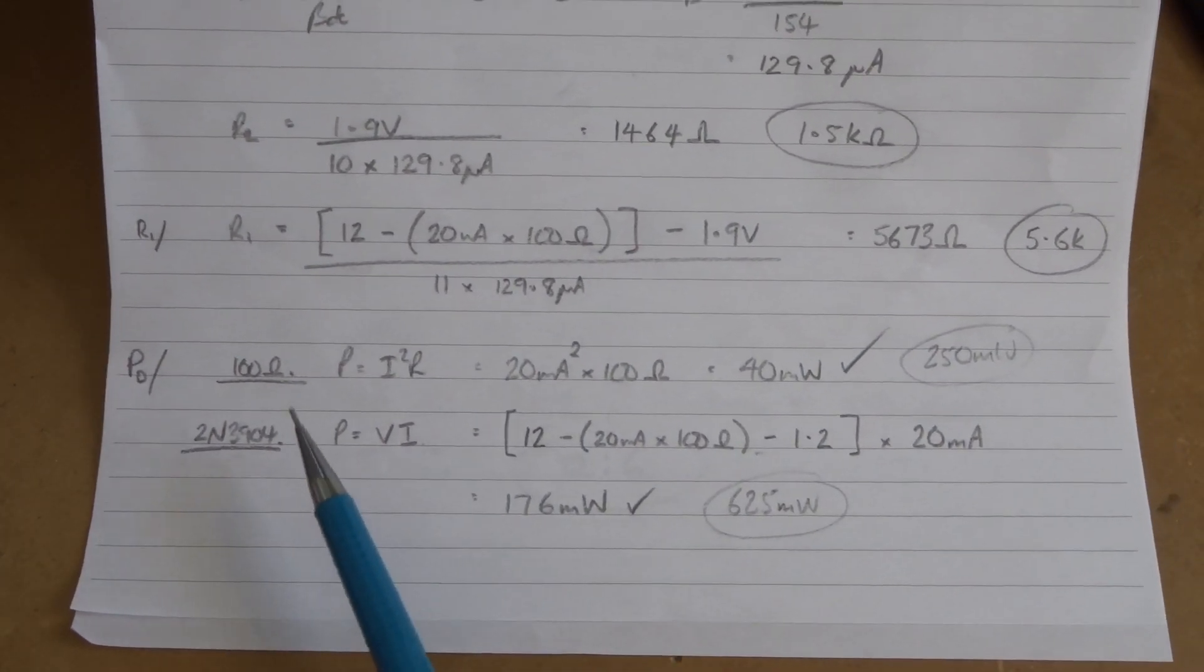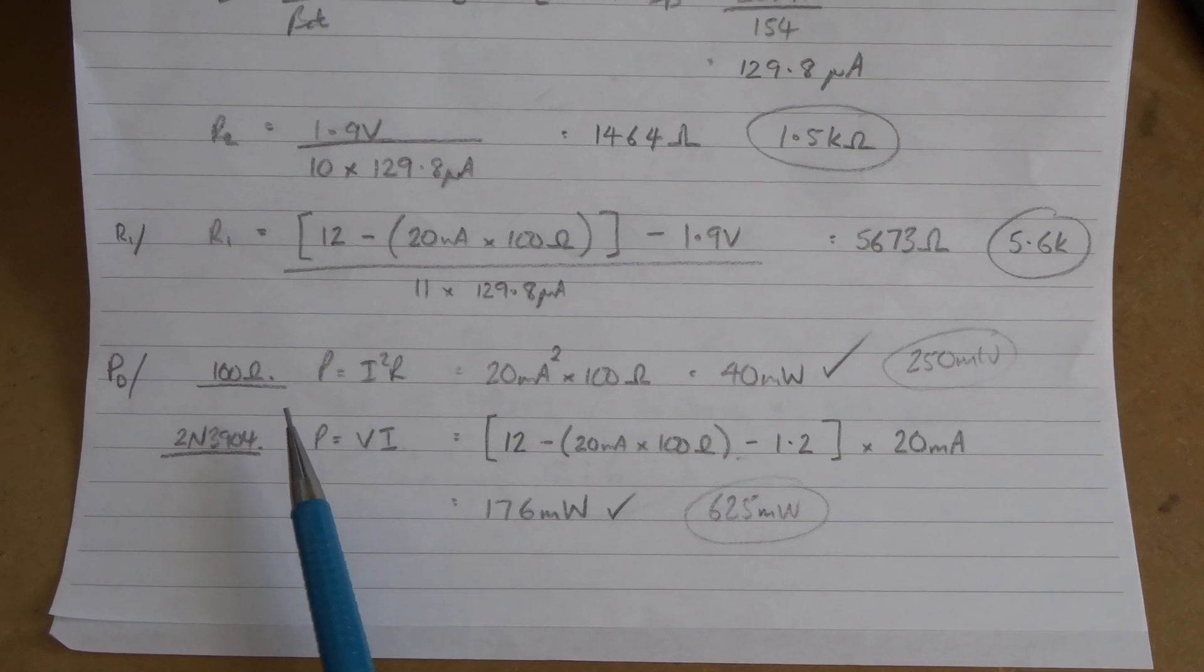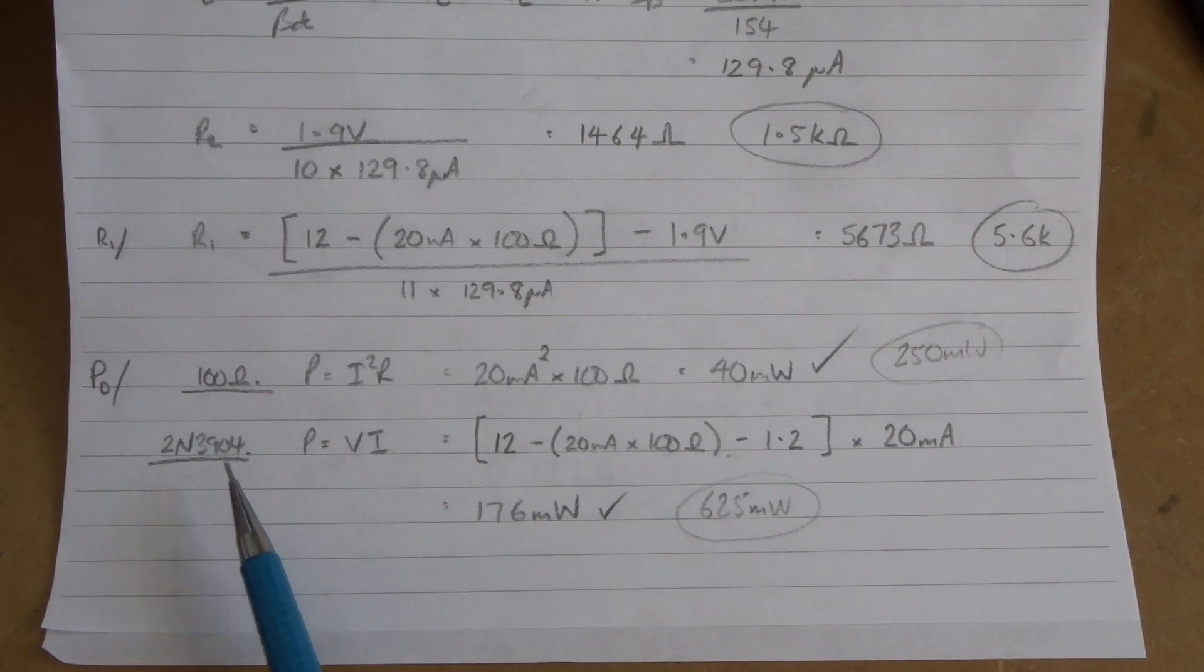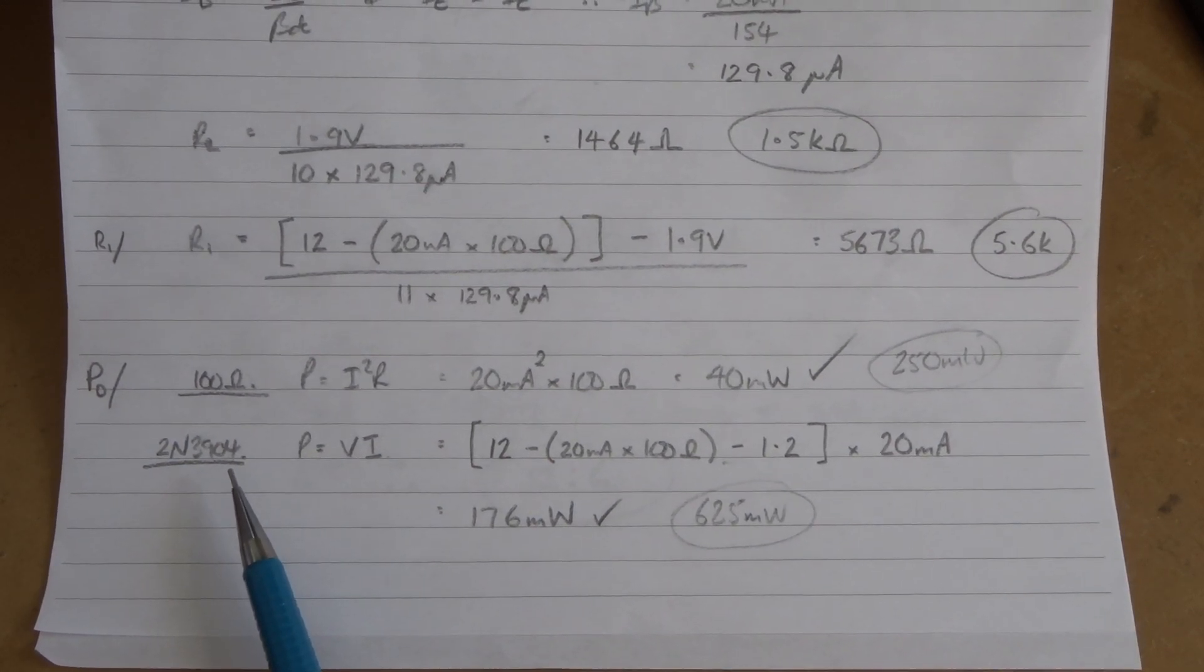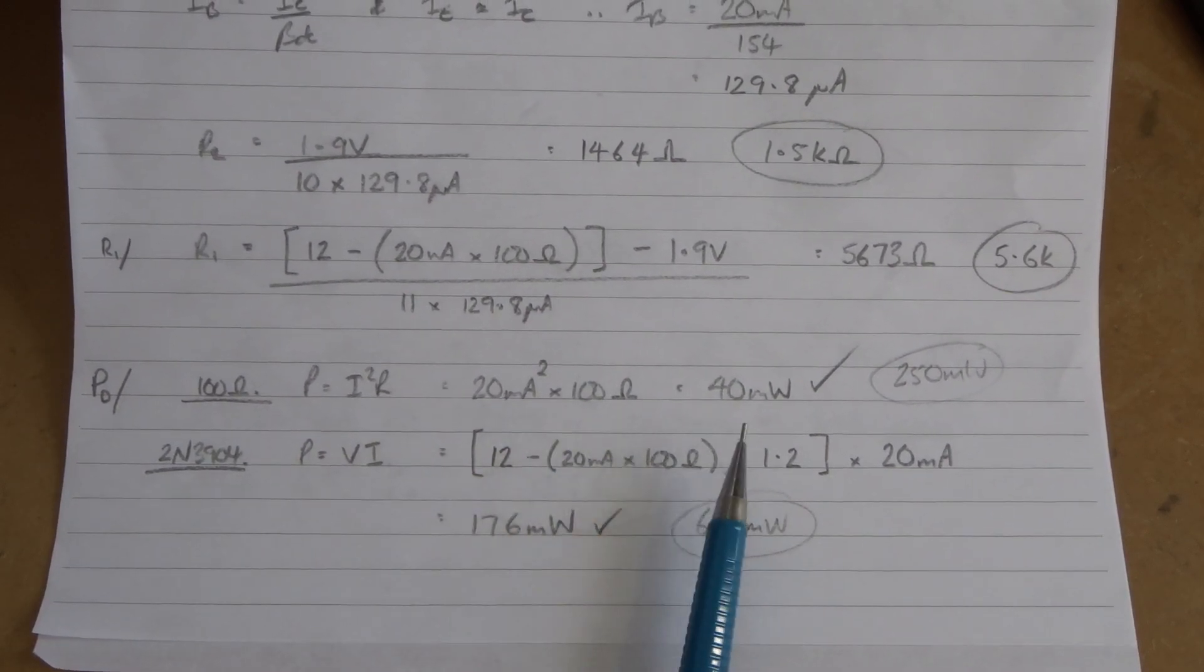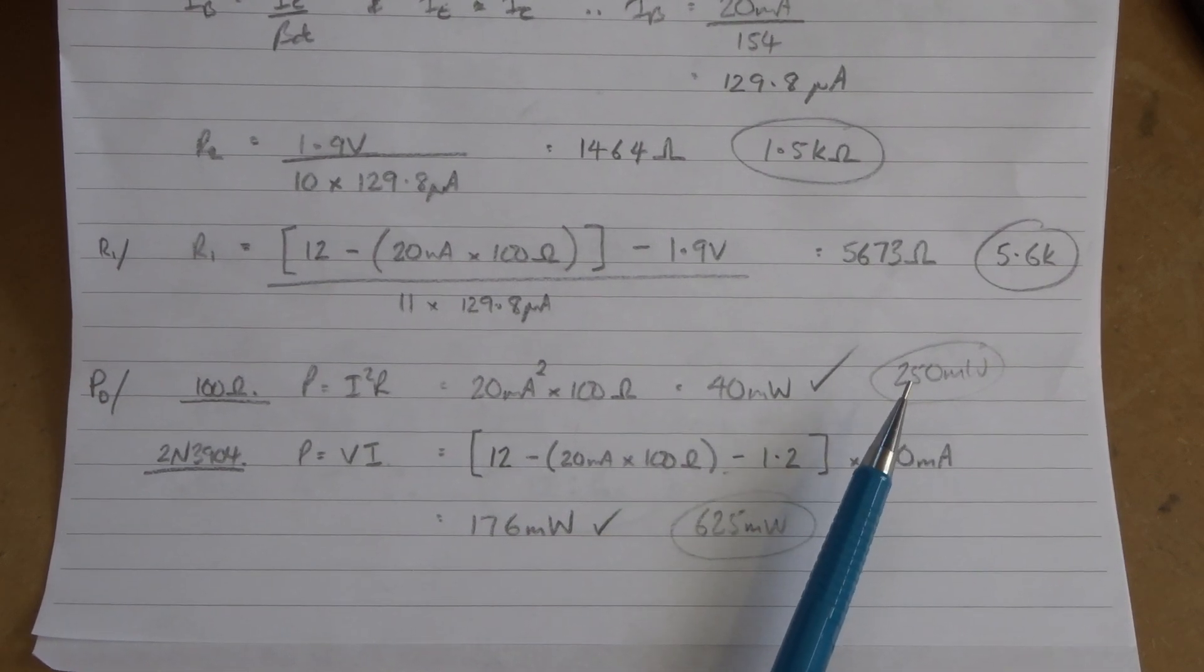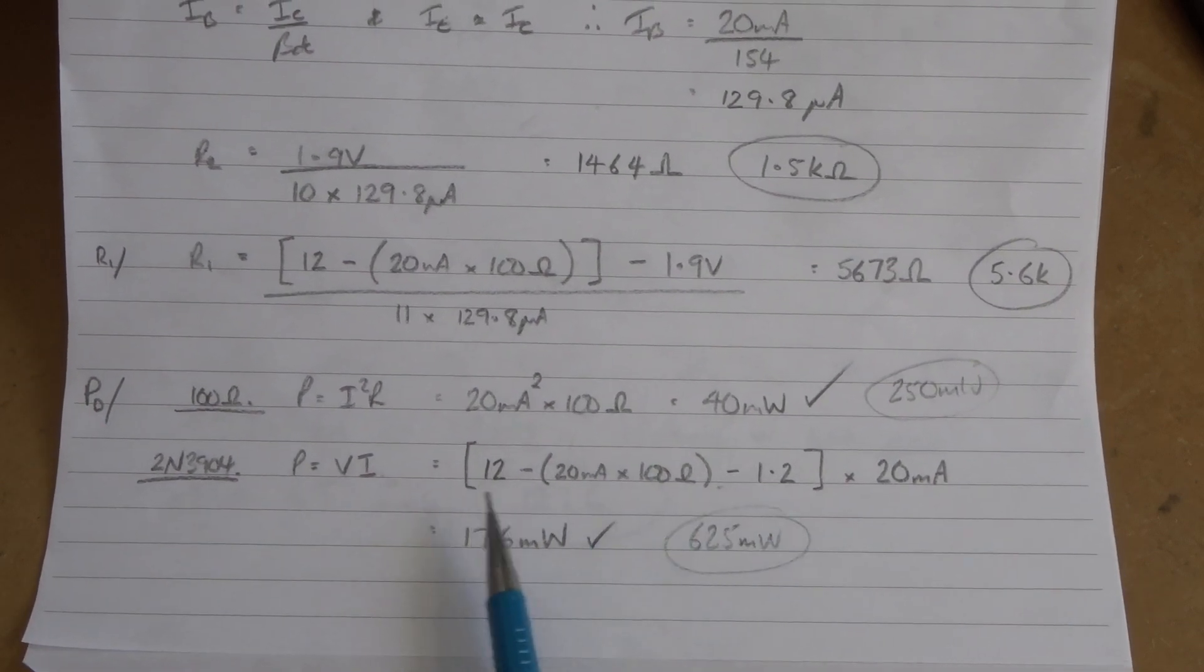For completeness I'm going to check at 20mA that I don't exceed the power dissipation of the 100 ohm resistor. Power equals I squared R, so 20mA squared times 100 ohms equals 40mW. That's well less than the 250mW for a quarter watt resistor.